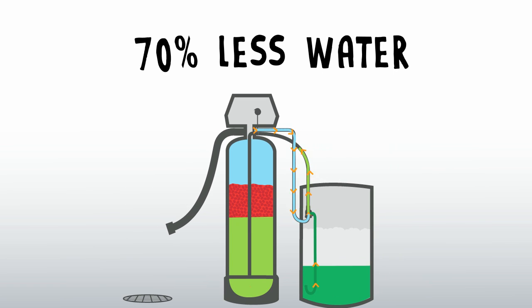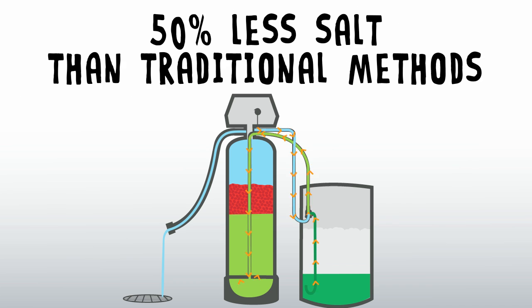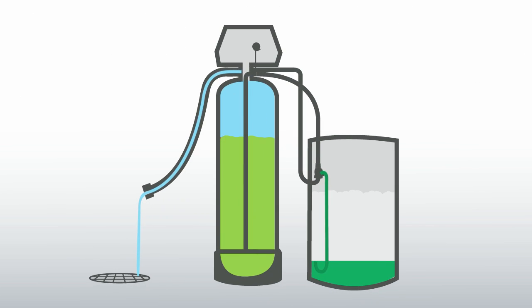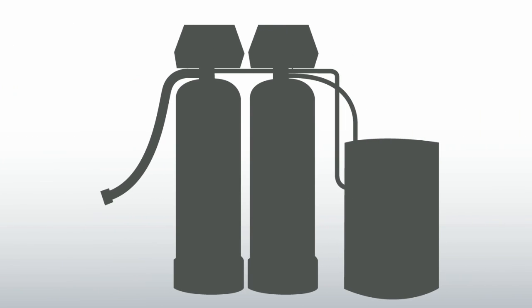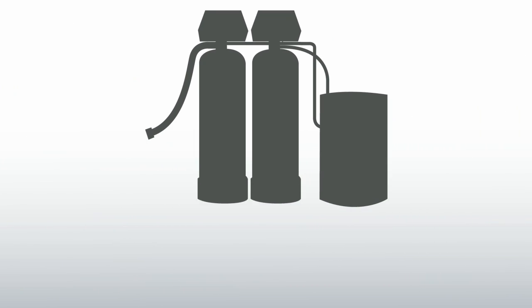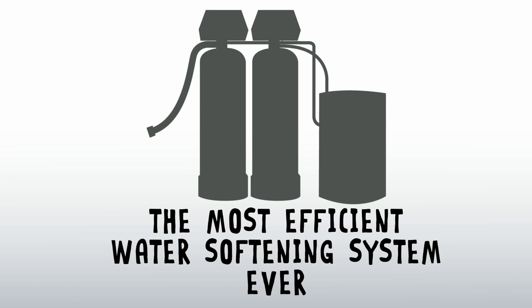This blended pulse method is so efficient that it uses less than 30 gallons of water for a complete regeneration cycle, and about half as much salt as traditional constant flow methods. Especially when paired with Clearion's new twin tank unit, this blended pulse regeneration method represents the most efficient water softening system ever offered.